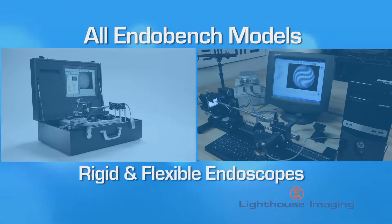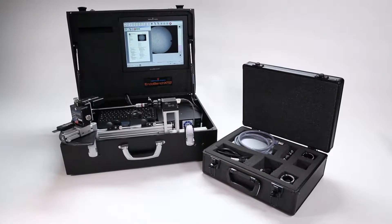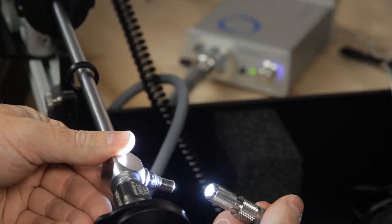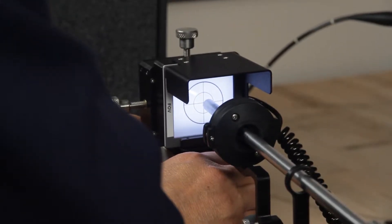All EndoBench models can measure both rigid and flexible endoscopes. One of the key features of the EndoBench XT2 and XTB is the ability to measure the illumination of the endoscope. We measure the distribution and location of the light because no matter how good your optics are, if your light's not shining where you're looking, you're not going to see anything.